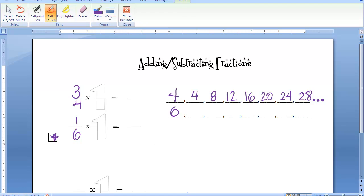Now, let's do 6. 1 times 6 is 6. 2 times 6 is 12. 3 times 6, 4 times 6, 5 times 6. And again, this could go on forever.